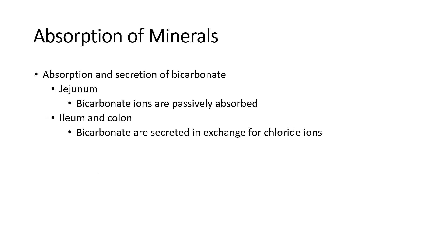Bicarbonate is absorbed in the jejunum — it's secreted into the duodenum and absorbed into the jejunum. Then in the ileum and colon, it's secreted in exchange for chloride ions. That same mechanism of exchanging chloride for bicarb on the basolateral surface of tubule cells in the kidneys is how we absorb and excrete bicarb in the colon as well — it's exchanged for chloride ions.